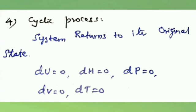Last one is cyclic process. When a system returns to its original state after completing a series of changes, it is said to be a cyclic process. In cyclic process: delta U equals zero, delta H that is enthalpy equals zero, delta P equals zero, delta V that is volume equals zero, and delta T equals zero.